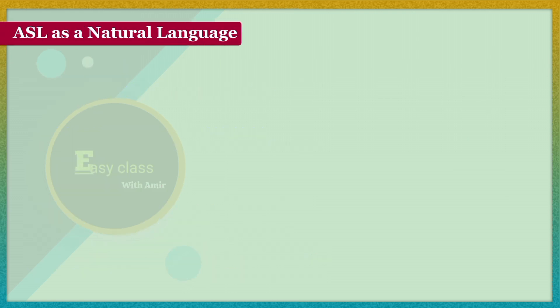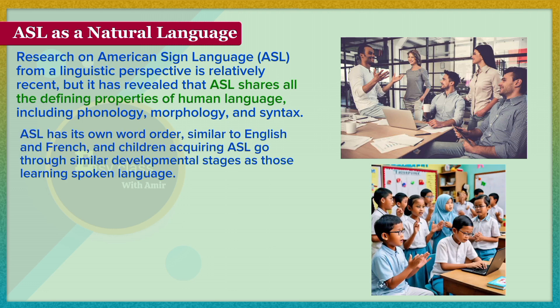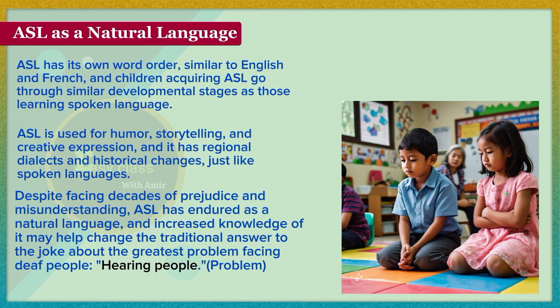Research on ASL from a linguistic perspective is relatively recent, but it has revealed that ASL shares all the defining properties of human language, including phonology, morphology, and syntax. ASL has its own word order, similar to English and French, and children acquiring ASL go through similar developmental stages as those learning spoken language. ASL is used for humor, storytelling, and creative expression, and it has regional dialects and historical changes, just like spoken languages. Despite facing decades of prejudice and misunderstanding, ASL has endured as a natural language, and increased knowledge of it may help change the traditional answer to the joke about the greatest problem facing deaf people: hearing people.